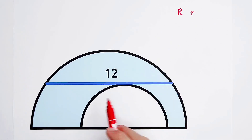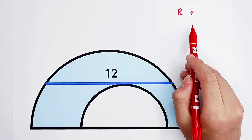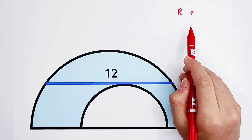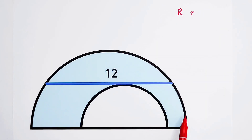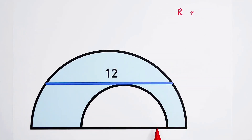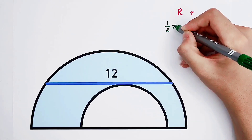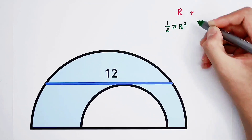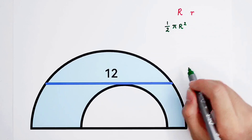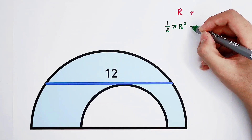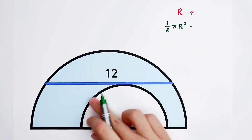The area of the shaded region should be expressed by capital R and small r. It is only the subtraction of the area of the big semicircle and the area of the small semicircle. A semicircle is half of a circle, so the area of a semicircle is one-half times pi times radius squared. Here is the area of the big semicircle, subtract the area of the small semicircle.